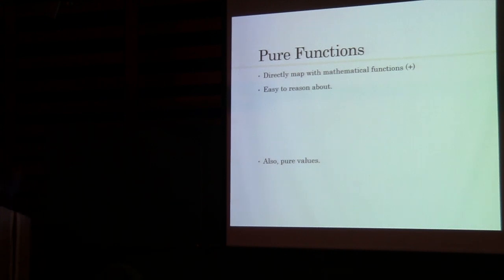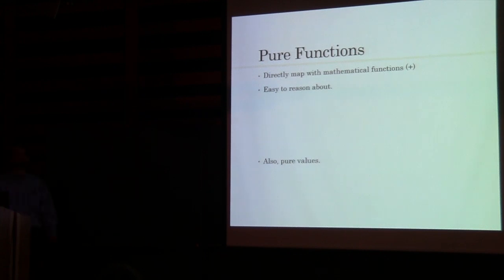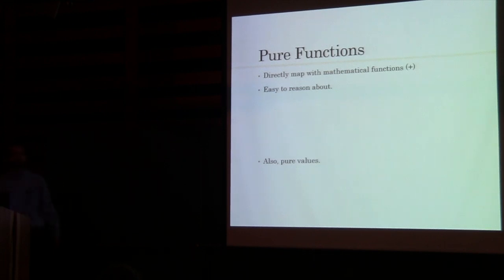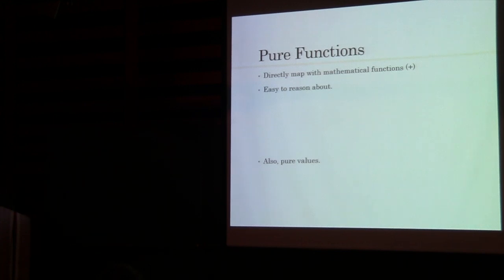We also have this idea of pure values. If I have an int, what can I do to make it pure? Never change it. So, if I have a constant i equals 6, i is 6 at the beginning, i is 6 at the end, i is always 6 — just like the functions when they're pure. The same input always produces the same output. So when we're talking about purity and functional programming concepts, we're talking about pure functions and pure values.